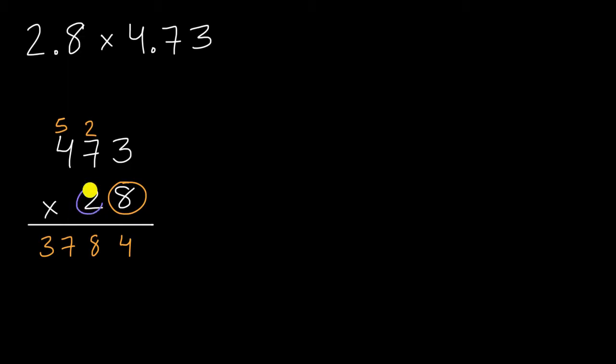And then we could multiply everything times the two. I'll cross those out so I don't get confused. Three times two is going to be six. Now we have to be very careful. We are now in the tens place, so we want a zero here. So three times two tens is going to be six tens. Seven times two is 14.